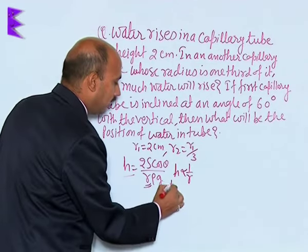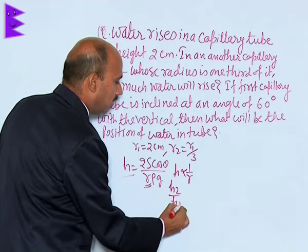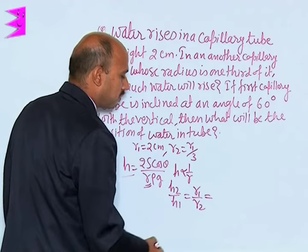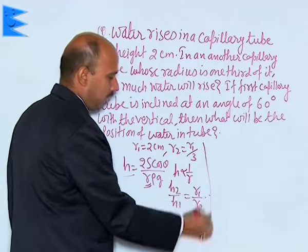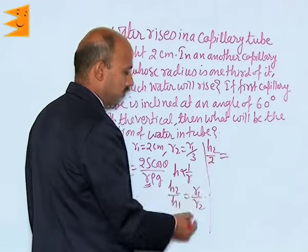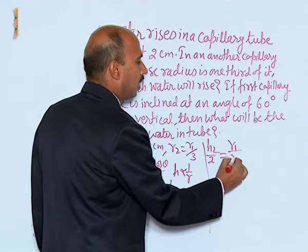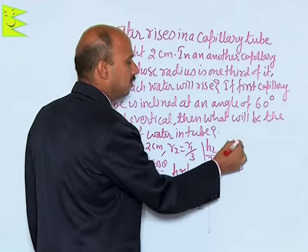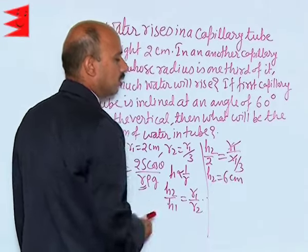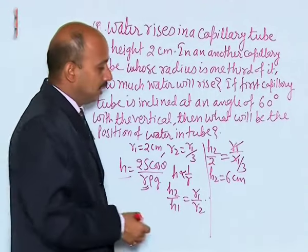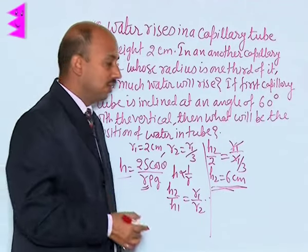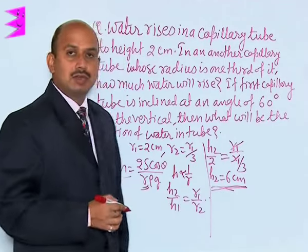So we can write h2 upon h1 is equal to r1 upon r2. We can write here, now in this case, h2 by 2 equals... that is equal to 6 centimeters. So the liquid in the second capillary tube, whose radius is one third of the first, is rising to 6 centimeters.